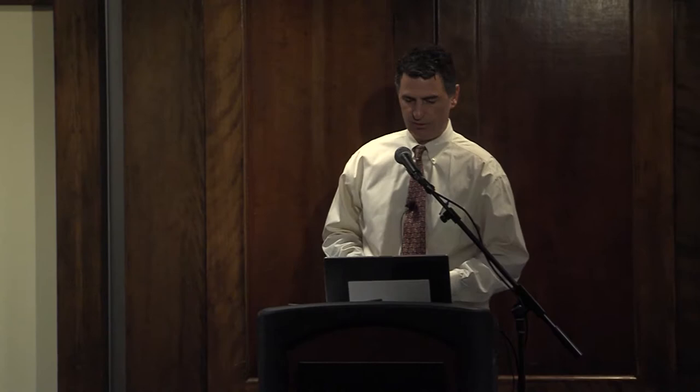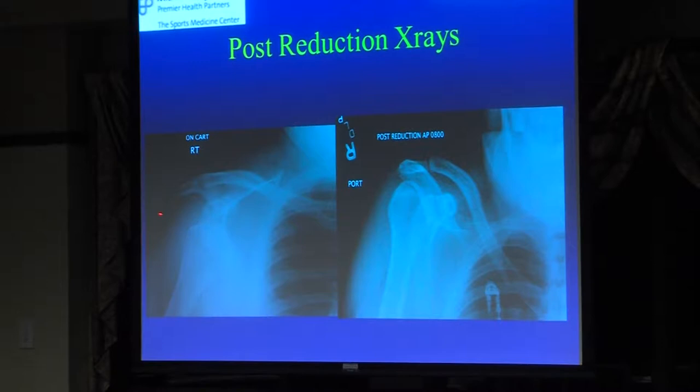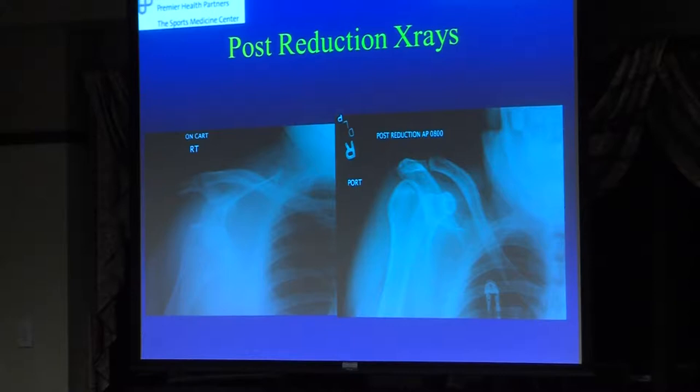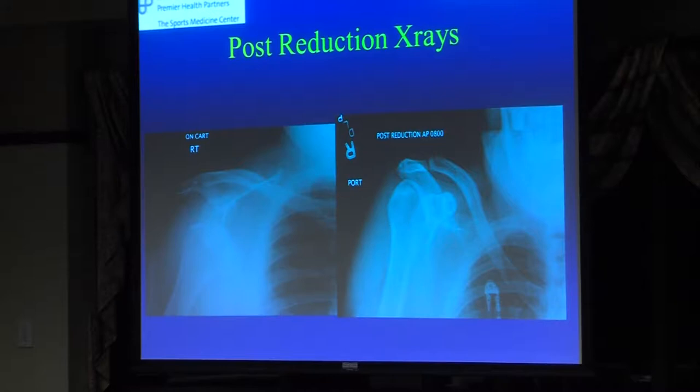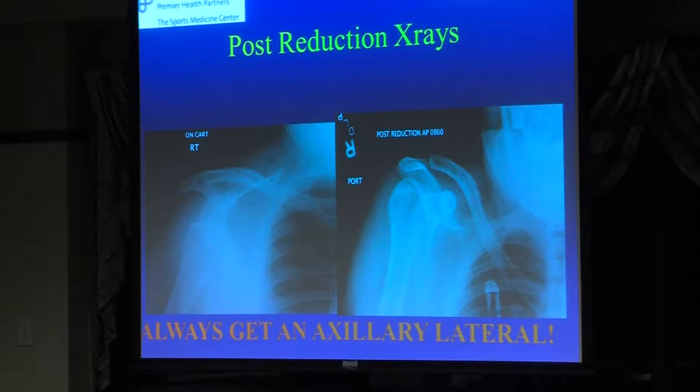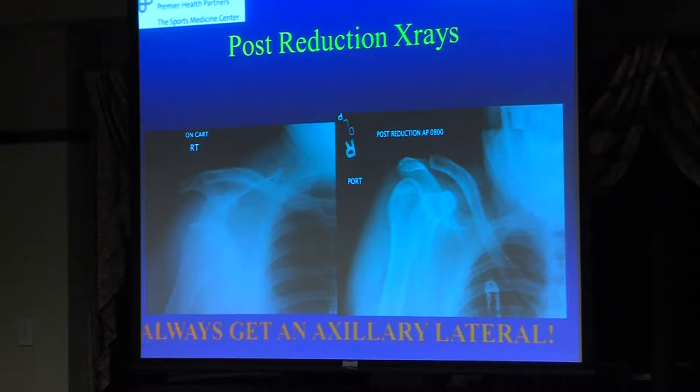A typical x-ray series would show the shoulder not in the socket on the left view. The glenoid and humeral head should be articulating. The view on the right is the reduction view from the emergency room. But you need to see that in more than one view — you need what's called an axillary lateral x-ray after every dislocation, and frankly it should probably be part of every shoulder evaluation.